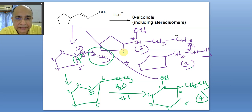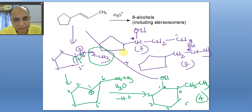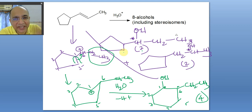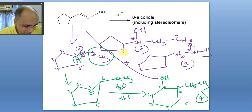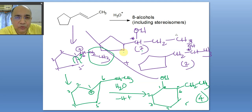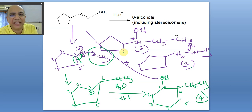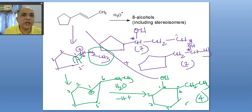Bottom line: there is no formation of a primary carbocation. The only case where a primary carbocation can be considered is ethene, but ethanol is not a chiral molecule. In all other cases you have at minimum a secondary carbocation, which can be promoted to tertiary by hydride transfer.